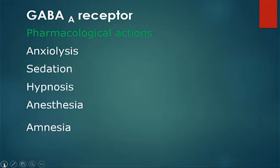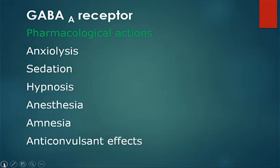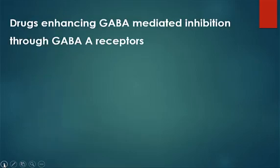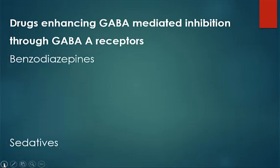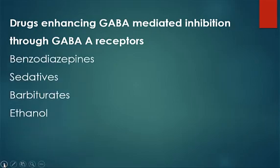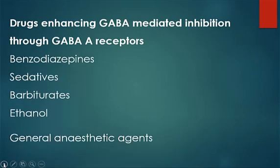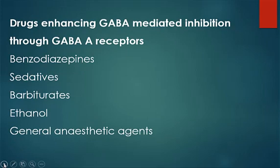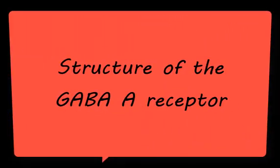Several neuroactive drugs, notably benzodiazepines, sedatives, barbiturates, ethanol, and general anesthetic agents, act via enhancing GABA-mediated inhibition through GABA-A receptors. However, they have different binding sites and are therefore called allosteric modulators. To understand their mechanisms, we first need to examine the structure of the GABA-A receptor.